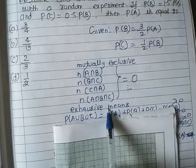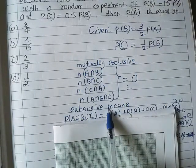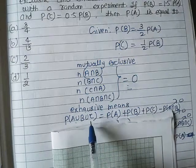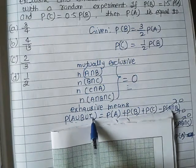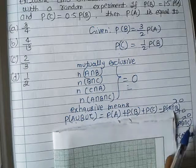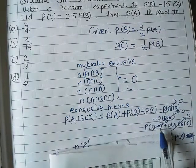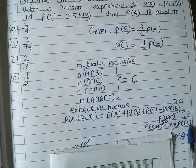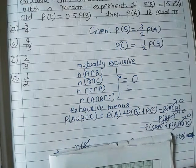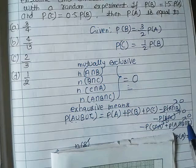Exhaustive means P(A union B union C) equals P(A) plus P(B) plus P(C) minus P(A intersection B) minus P(B intersection C) minus P(C intersection A) plus P(A intersection B intersection C), which equals zero since they're mutually exclusive.